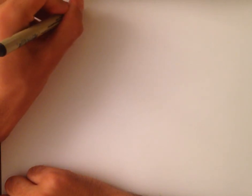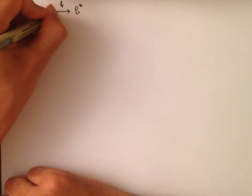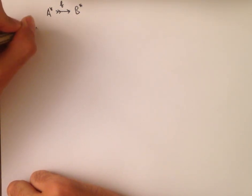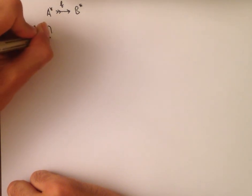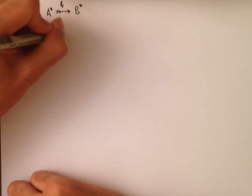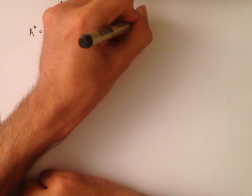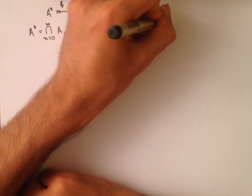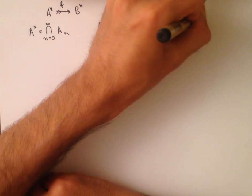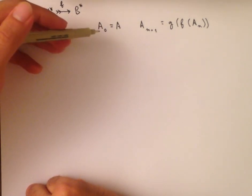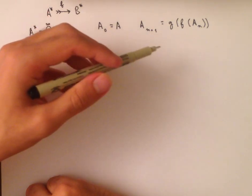Last time I ended with the bold claim that A* mapped to B* using F is a bijection. I'm now going to go over this claim in more detail. Recall that A* is equal to the intersection as n goes from 0 to infinity of all A_n, where A_n is defined inductively by A_0 equals A, and A_{n+1} equals G of F of A_n. This is what we call an inductive definition — we say what the first element is, and then define how to get the next element from the one before it.